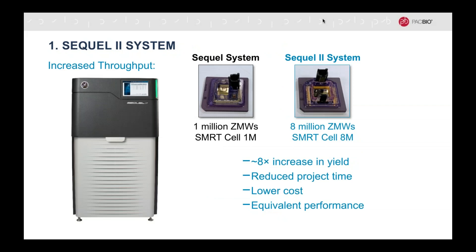This shakes up the idea of a trade-off between accuracy and read length by adding the PacBio HiFi data type that is both long — reads can be between 10 and 20 KB — and accurate, with HiFi reads having accuracy higher than 99%. We have recently released our new sequencing platform called the Sequel II system. The Sequel II features eight-fold higher throughput compared to the earlier Sequel system, with reduced project times and costs while having equivalent performance.